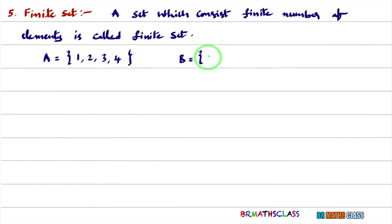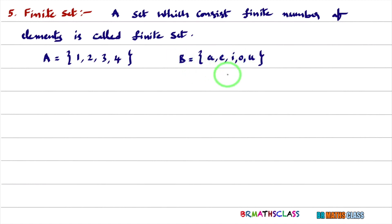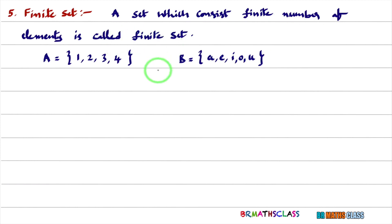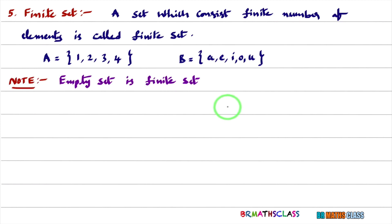One more example: collection of all vowels in the English alphabet. This set is a finite set because it is having a finite number of elements — five elements are present in set B. Important note: empty set is treated as a finite set. So if someone asks, we need to say it is a finite set because it consists of no element.